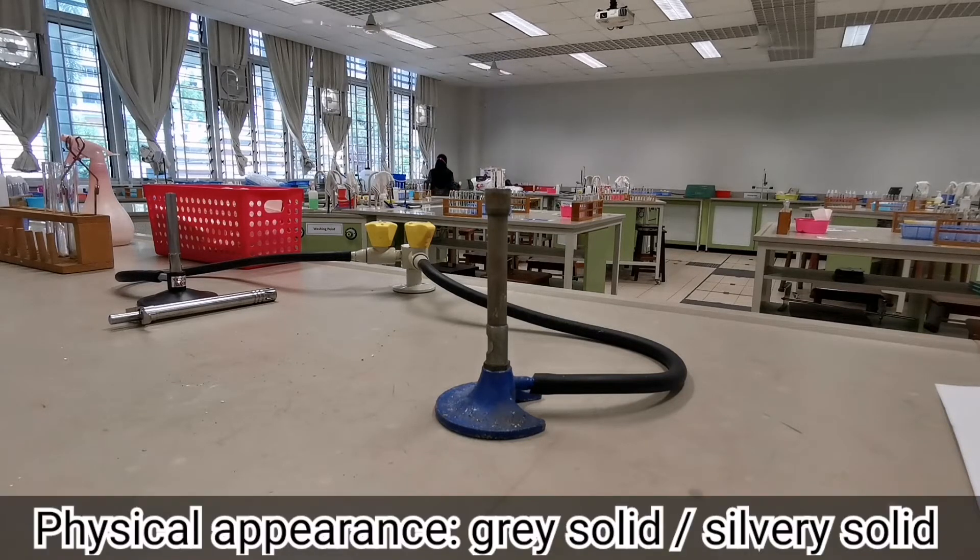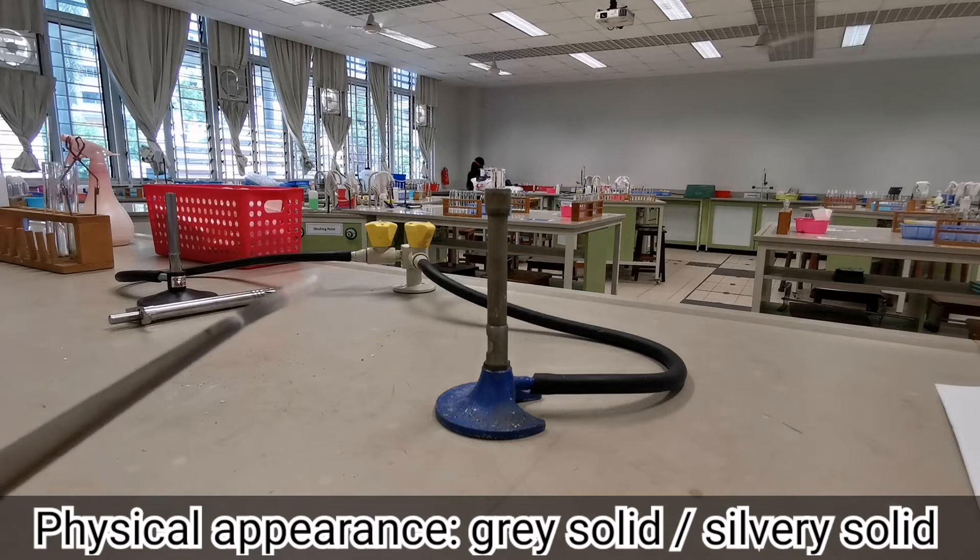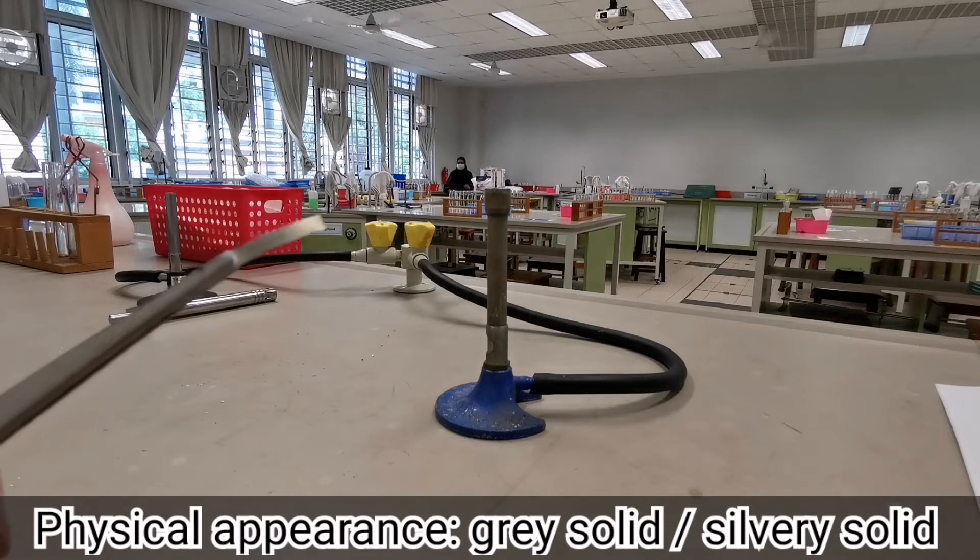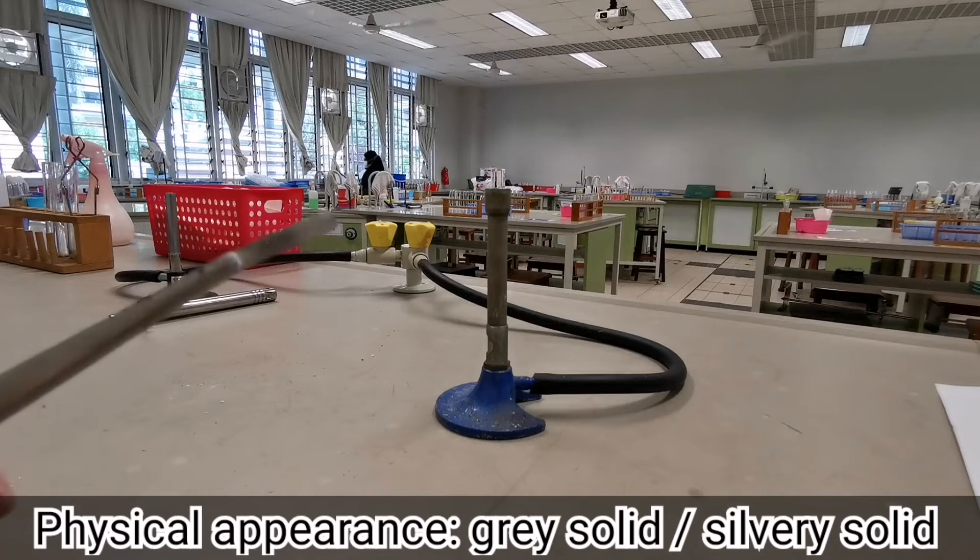First up, let's observe the appearance of the magnesium strip before heating. As you can see, the magnesium strip is a grey solid or a silvery solid.